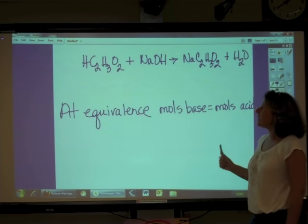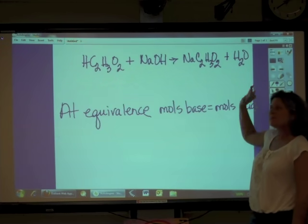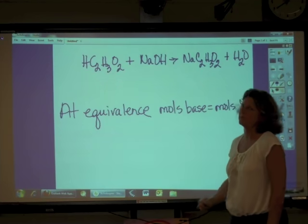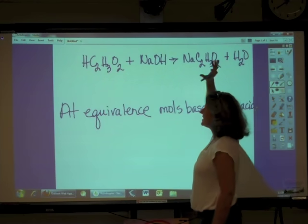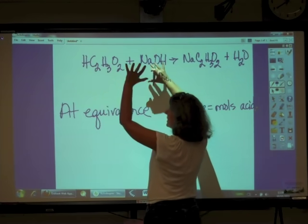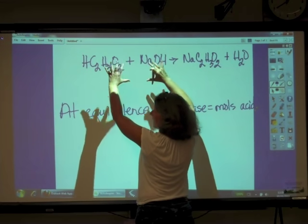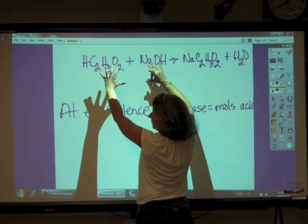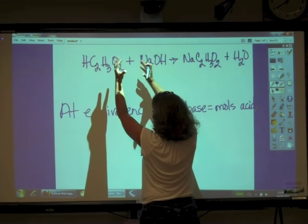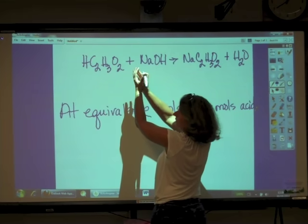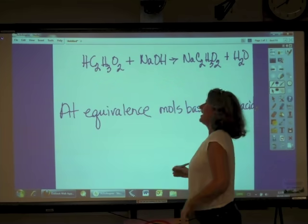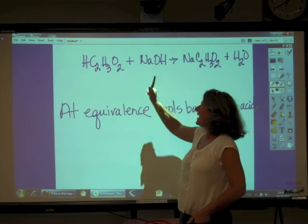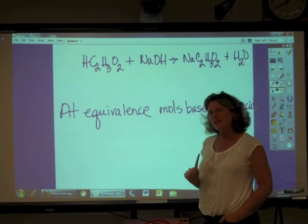And that means that in the beaker, at equivalence, because we have exactly the same number of moles as this, we have the stoichiometric ratio. The acid and the base have completely combined with each other. So, is there any acid or base left in the beaker?